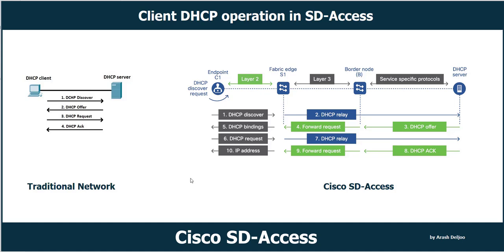In Cisco SD Access the process is different. We have the endpoint C1, the fabric edge node S1 (a switch), and the border node — through which we can reach outside the SD Access fabric to shared services. There may also be a fusion router. The DHCP server is in shared services. Between the fabric edge node and endpoint we have a Layer 2 network, while between the fabric edge and border node we have Layer 3. The switch port connecting to the client is configured in a VLAN, and the fabric edge S1 has an anycast gateway for the client IP pool.